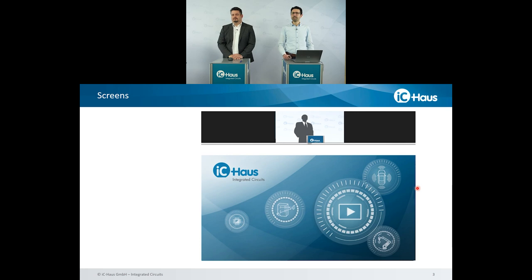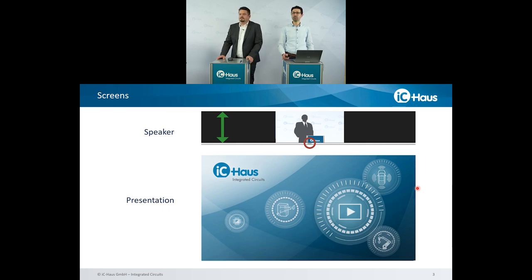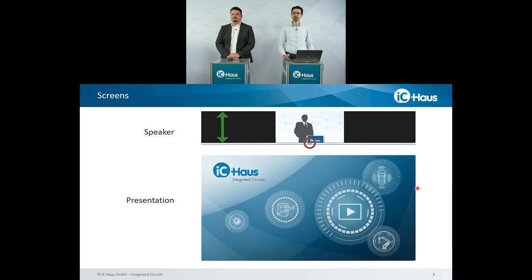This is the main screen. At the top you see the speaker, and on the bottom there's the presentation content. In the middle, there is a slider. You can enlarge the speaker or the presentation content by grabbing the slider and moving it up and down. But please be careful — don't go all the way up or all the way down, then you might lose some content or one of these screens.